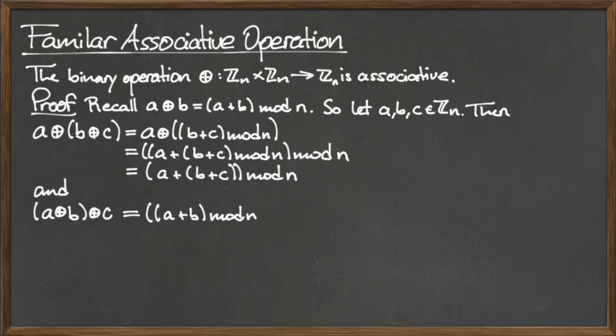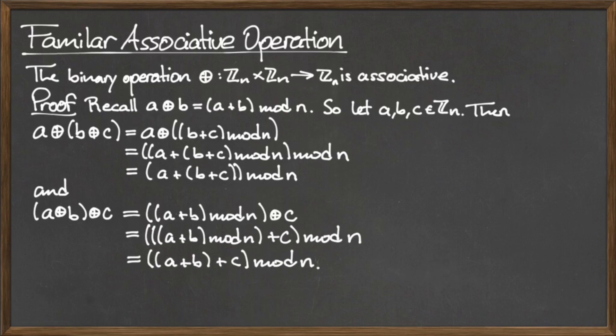we see that a o plus the quantity b o plus c is equal to the quantity a plus the quantity b plus c all mod n.